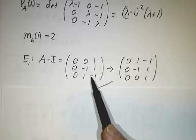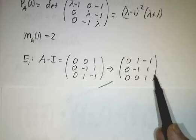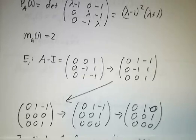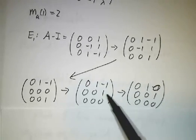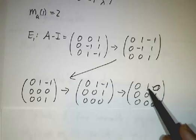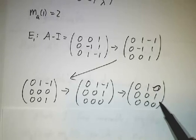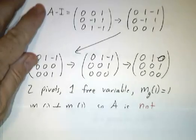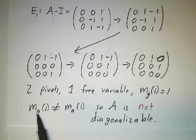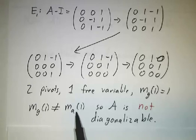And to row reduce it, we'll swap the first and third row. Then we'll add the first row to the second. Now swap the second and third rows. Add that second row to the first. And you see, now we've got two pivots. There are two pivots, so there's only one free variable. So the geometric multiplicity is 1. The geometric multiplicity did not equal the algebraic. This was 1, this was 2, so A is not diagonalizable.